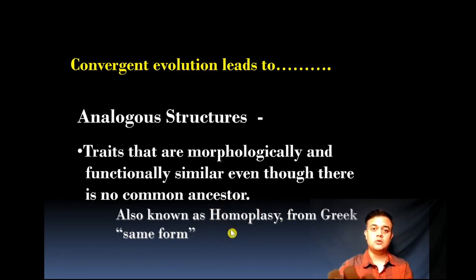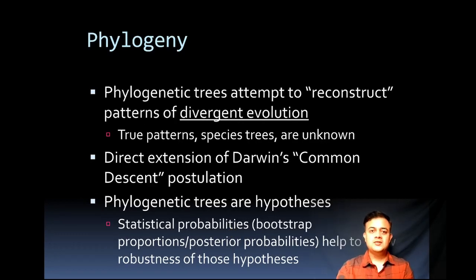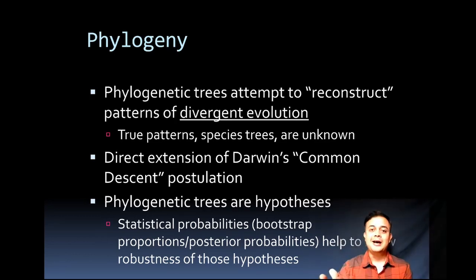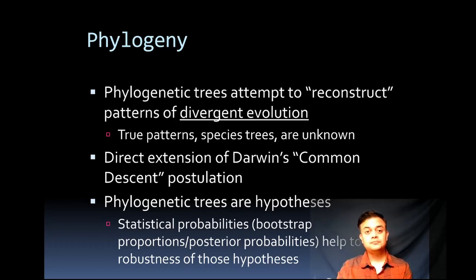Phylogeny is an attempt to reconstruct the pattern of divergent evolution — the true or natural patterns. Phylogenetic trees are hypotheses; the real evolutionary trees, or species trees, remain unknown. Any kind of phylogenetic tree is a biological or scientific hypothesis that works with probability. It is highly probable the tree of life is true, but probability can never be one — that is why it is a theory.